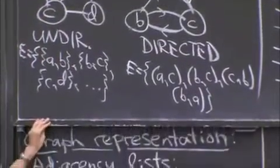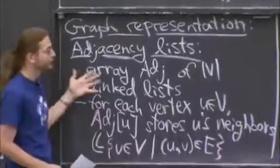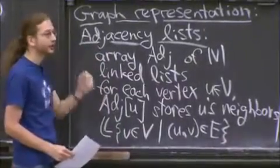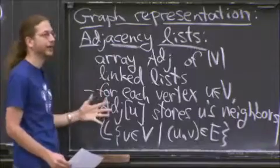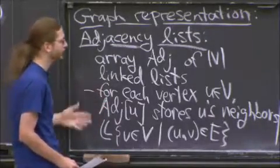So this, for pretty much every, at least for graph exploration problems, this is the representation you want. Because you're at some vertex, you want to know, where can I go next? And adj of that vertex tells you exactly where you can go next. So this is what you want.